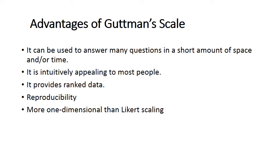The advantages of the Guttman scale are: it is very easy to answer in a limited amount of time, easy to understand, and many items can be accommodated in a small space. It is appealing to respondents because they only choose between yes or no. It provides ranked data, following an ordinal arrangement of items numbered one, two, three, four, five. Additionally, it has the property of reproducibility and is a unidimensional scale, similar to the Likert scale.